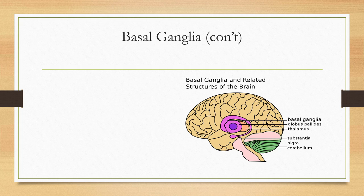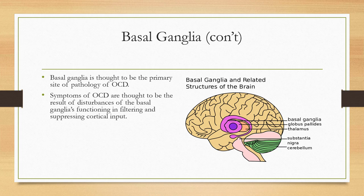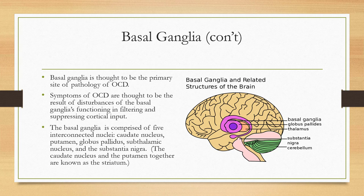Looking at this in more detail, you can see a slice of the brain demonstrating the basal ganglia and its relationship to the globus pallidus, the thalamus, the substantia nigra, and the cerebellum. The basal ganglia is thought to be the primary site of pathology in obsessive-compulsive disorders. The symptoms of OCD are thought to result from disturbances of the basal ganglia's functioning in filtering and suppressing cortical input. The basal ganglia is comprised of five interconnected nuclei.